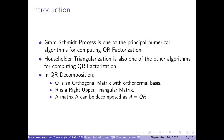In introduction, the Gram-Schmidt process is one of the principal numerical algorithms for computing QR factorization, and Householder triangularization or transformation is one of the other algorithms for computing QR factorization. In QR decomposition, Q is an orthogonal matrix with an orthonormal basis. R is a right upper triangular matrix, and we say a matrix A can be decomposed as A equal to QR.